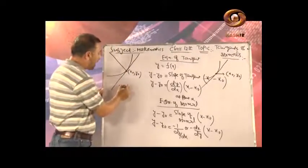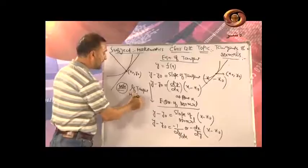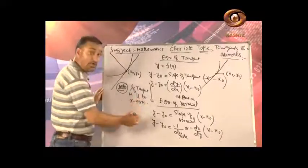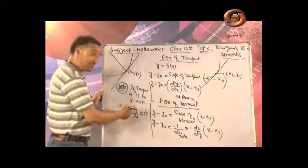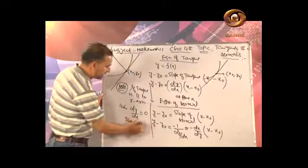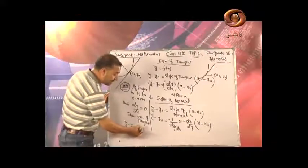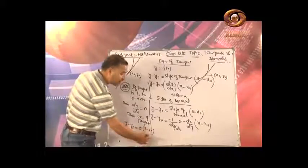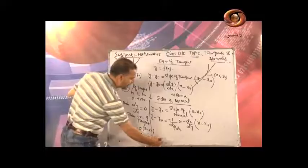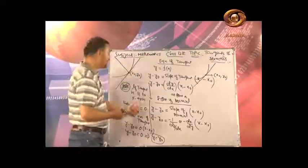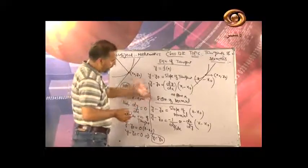Additional note: If the tangent is parallel to the x-axis, then dy/dx = 0. Substituting into the tangent equation: y - y₀ = 0 · (x - x₀), giving y = y₀ as the equation of the tangent. Similarly, if the tangent is parallel to the y-axis, you can derive the corresponding equation yourself.